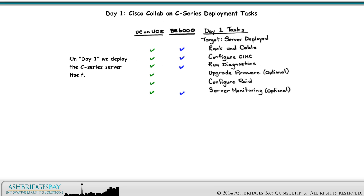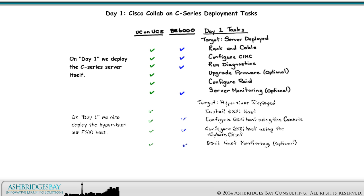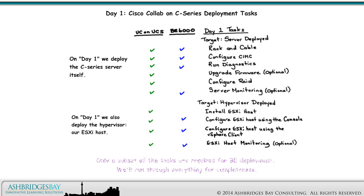Here are the Day 1 tasks for Cisco Collab on C Series. On Day 1, we deploy the C Series server itself. On Day 1, we also deploy the hypervisor — our ESXi host. Only a subset of the tasks are required for BE deployment. We'll run through everything for UC on C Series.